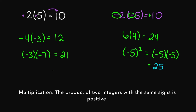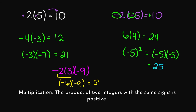And what if you had something like negative 2 times 3 times negative 9? We do the same thing. Negative 2 times 3 is going to be negative 6, and then negative 6 times negative 9 is going to give you a positive 54.